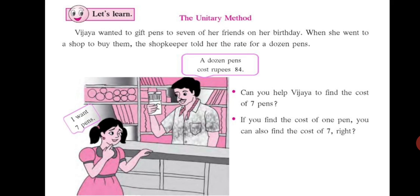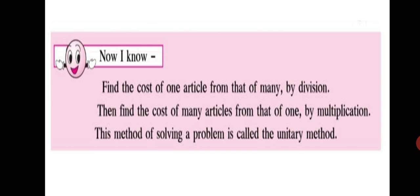That means altogether Vijaya will have to pay Rs. 49. So what did we do here? First we found the cost of 1 pen from many by division, and then we multiplied it with the number of pens she wanted to buy. So first division, then multiplication. The unitary method: find the cost of 1 article from that of many by division, then find the cost of many articles from that of 1 by multiplication. This method is called the unitary method.